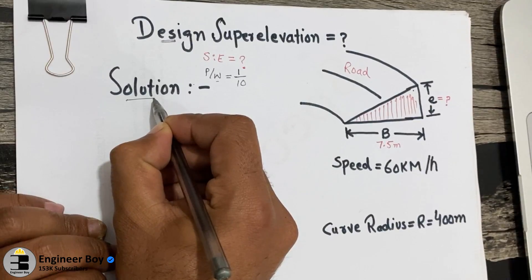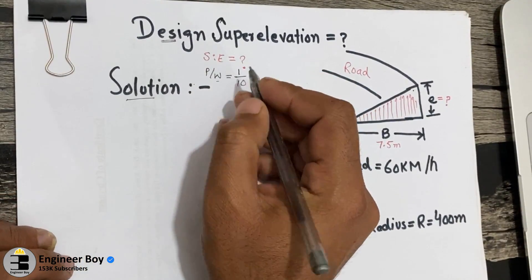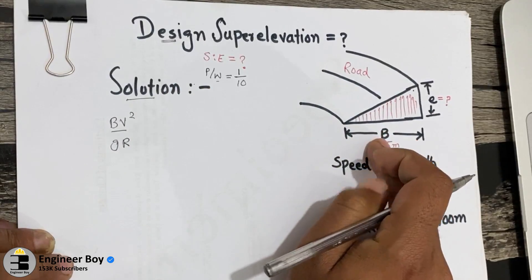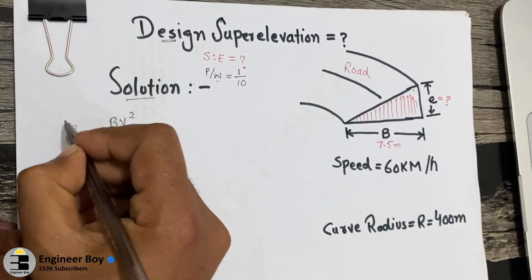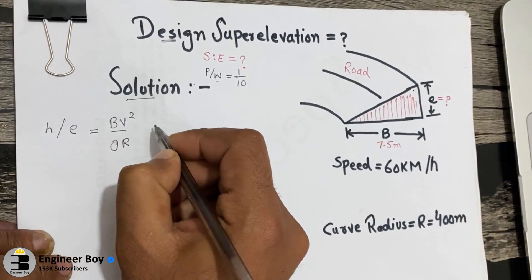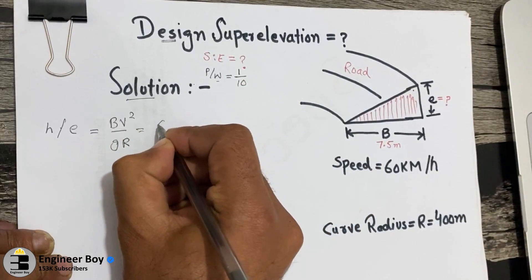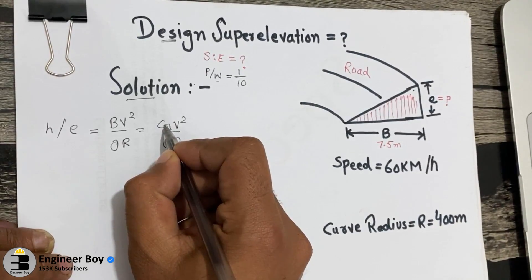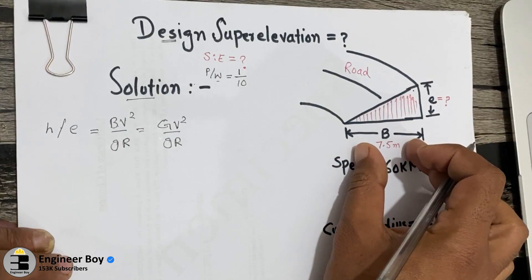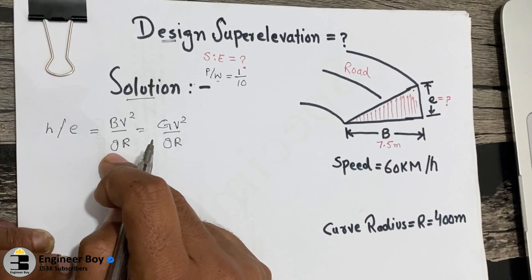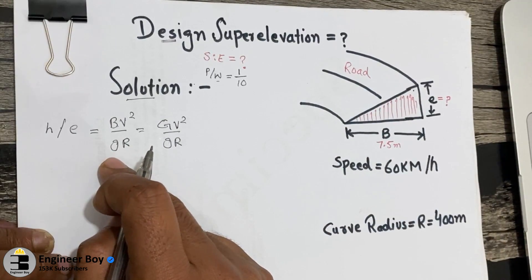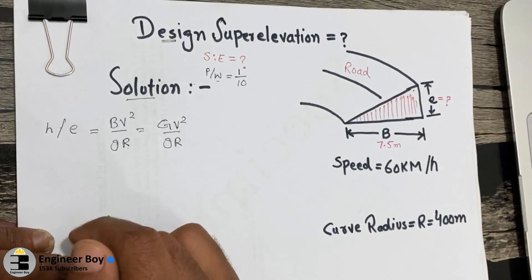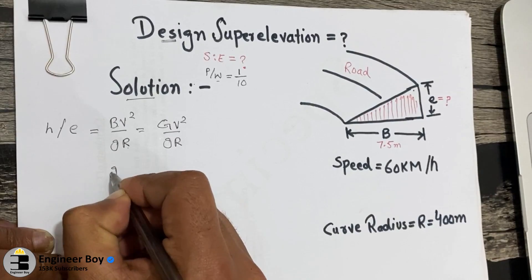The design super elevation can be calculated as B times V squared divided by g times R, where this is used for roads and is denoted by e, sometimes h. For railways, you would use capital G times V squared divided by g times R, where capital G is the gauge, capital B is the breadth of the road, small g is the acceleration due to gravity, R is the curvature radius, and V is the design speed of the vehicle.